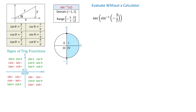Hello, in this video we will evaluate secant of inverse sine of negative 3 over 7, and we will do this without the use of a calculator. To the left we have some information that will help us solve this problem, and to find the value of this expression we will look at what we have inside the parenthesis, which is inverse sine of negative 3 over 7.